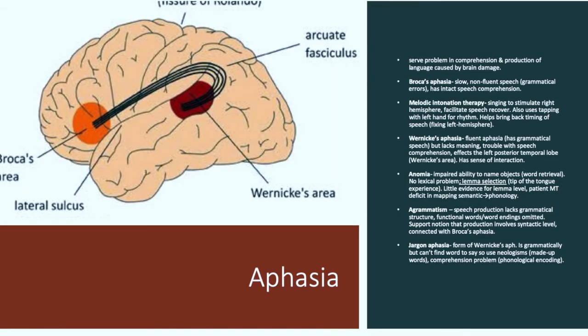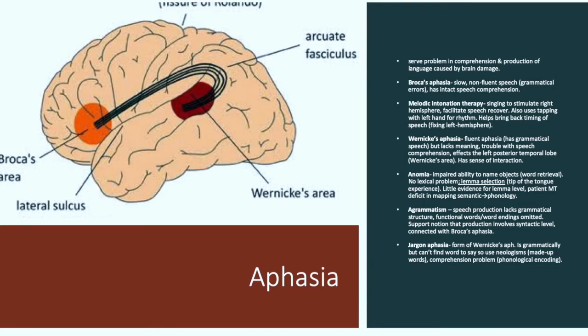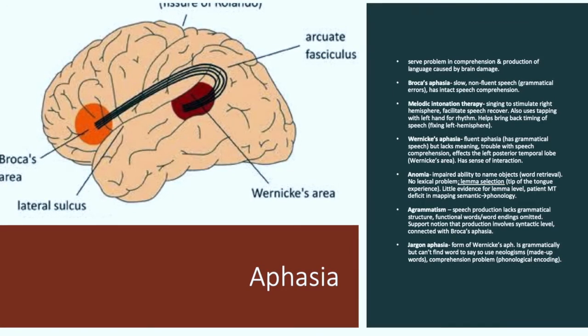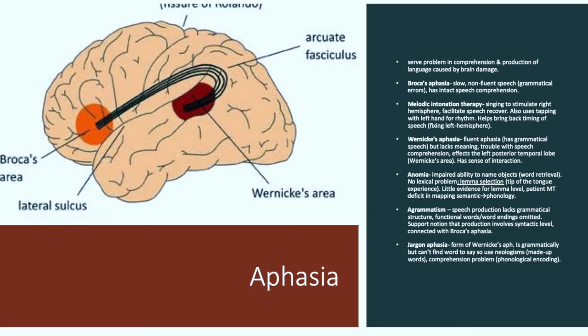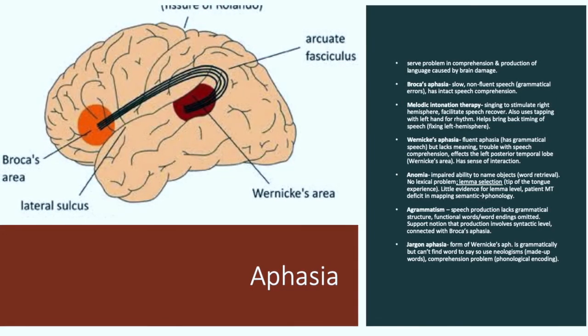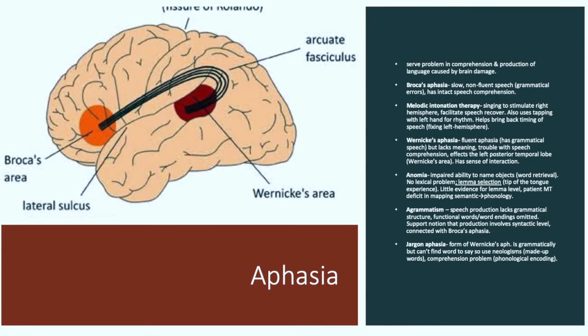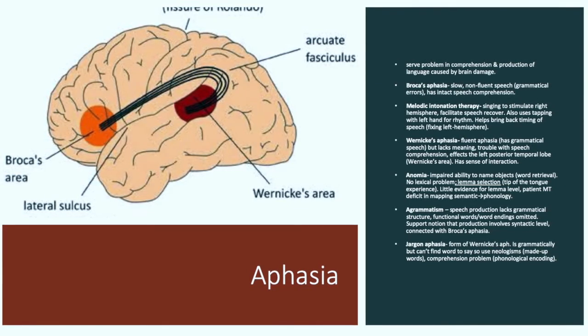Anomia. This is defined as the impaired ability to name objects. So basically, unable to retrieve words. They have no lexical problems, but they're always on the cusp of what is called lemur selection, which is that tip of the tongue experience. There is little evidence for lemur level, and patient MT, for example, had a deficit in mapping semantic to phonology.